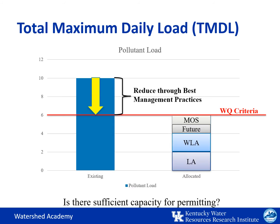More typically, a TMDL calculation is used to help regulators determine whether or not there is sufficient capacity in a water body for added inputs from permitted point source dischargers. As with the process used in existing load comparison to benchmark loads in watershed planning, a TMDL is also compared to related water quality criteria. For example, if a stream is already exceeding its water quality criteria for nitrogen, a discharge permit application that would result in added nitrogen inputs from a proposed sewage treatment plant upgrade would not be acceptable.